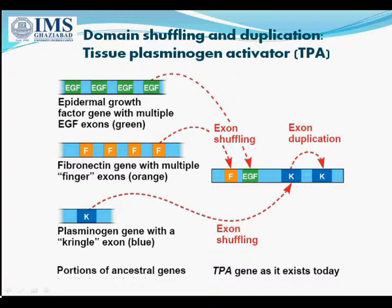Domain shuffling and duplication is illustrated by tissue plasminogen activator, a protein found in the blood of vertebrates which is involved in the blood clotting response. The TPA gene has four exons, each coding for a different structural domain. The upstream exon codes for a finger module that enables the TPA protein to bind to fibrin, a fibrous protein found in the blood clot, which activates TPA. This exon appears to be derived from a second fibrin-binding protein, fibronectin.